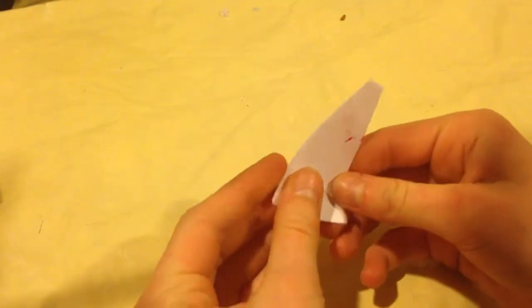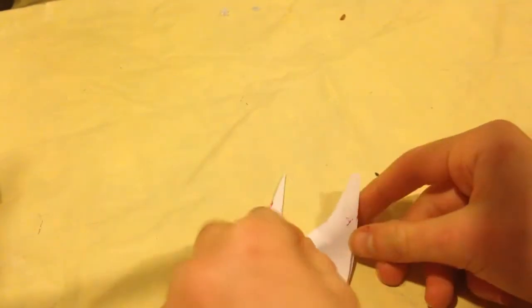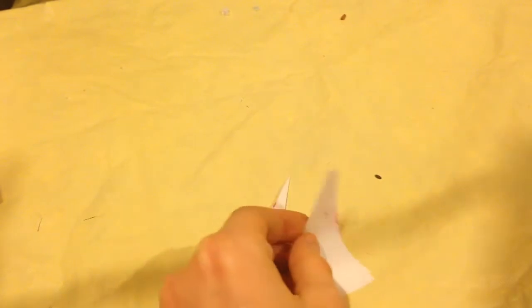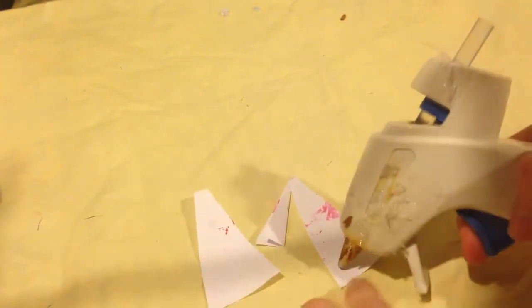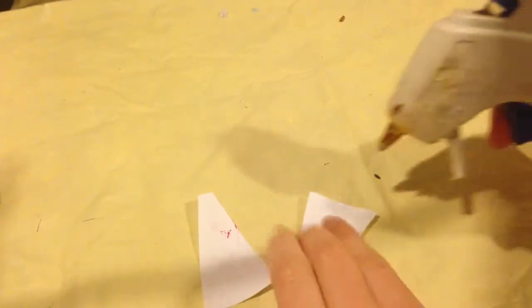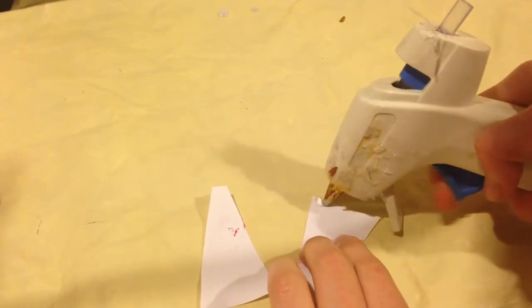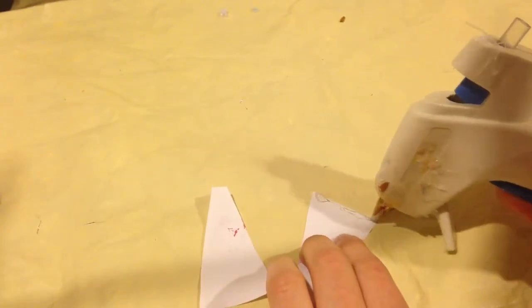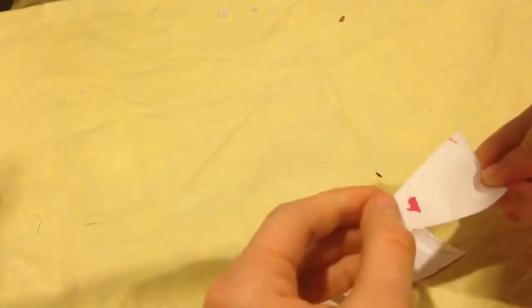You're going to take your hot glue gun, and you're going to glue a line at the bottom. And stick the bottom of the other one down also.